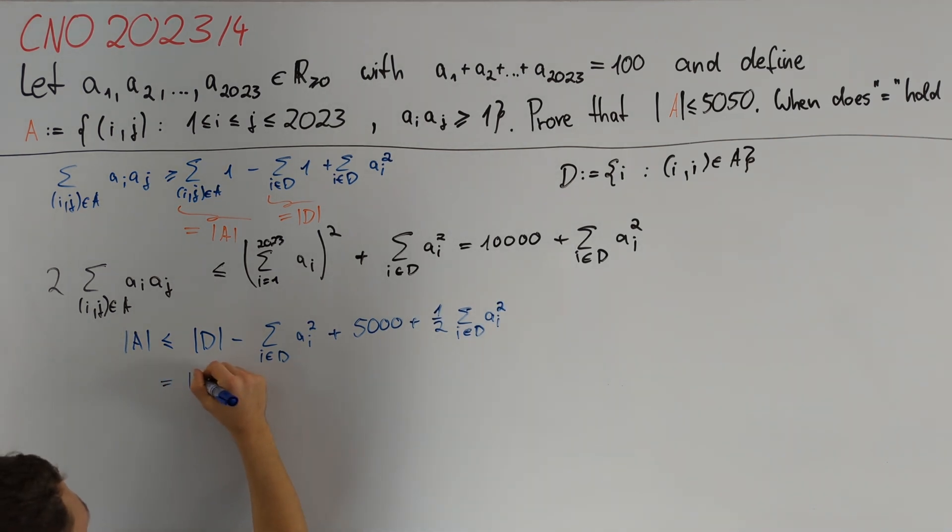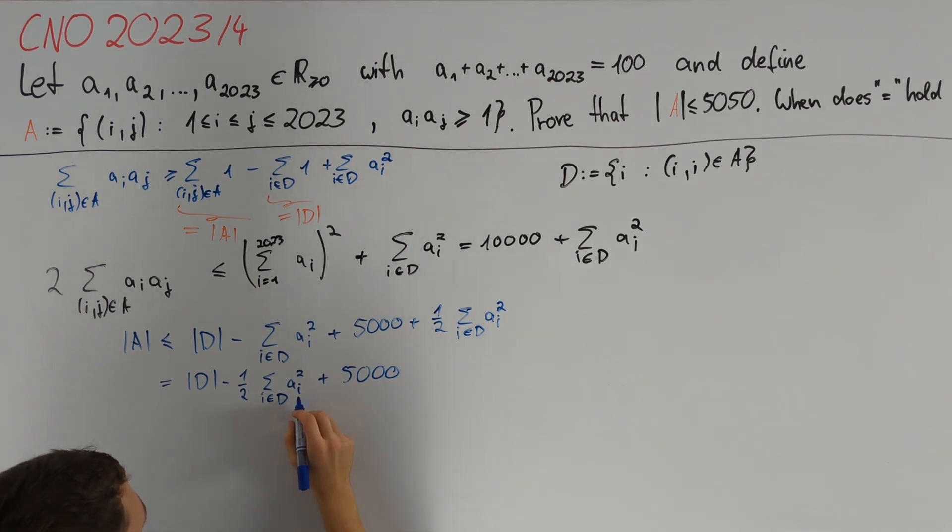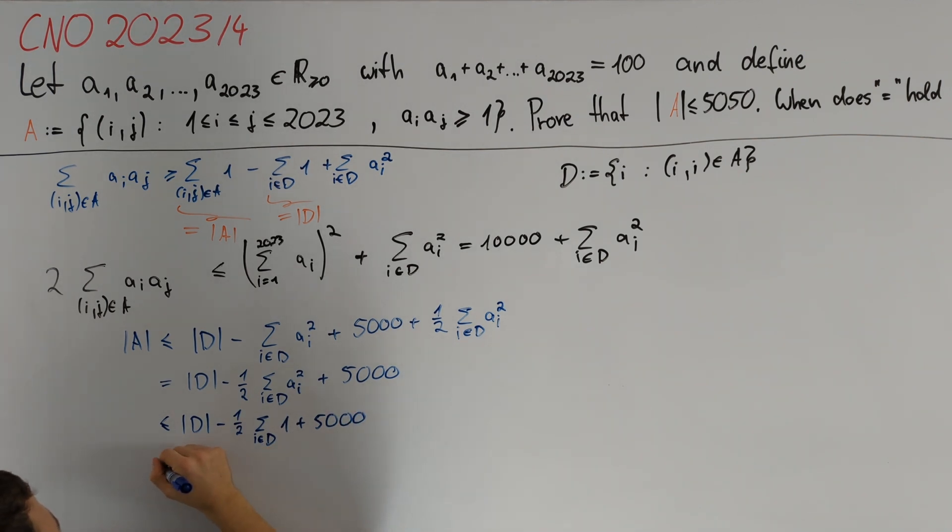Combining terms yields cardinality of d minus a half times the sum of i in d of a_i squared plus 5000. Since these a_i squared are greater than or equal to 1 and we have a negative sign in front, this is less than or equal to the cardinality of d minus a half times the sum of i in d of 1 plus 5000. And as before, this is equal to a half times cardinality of d plus 5000.